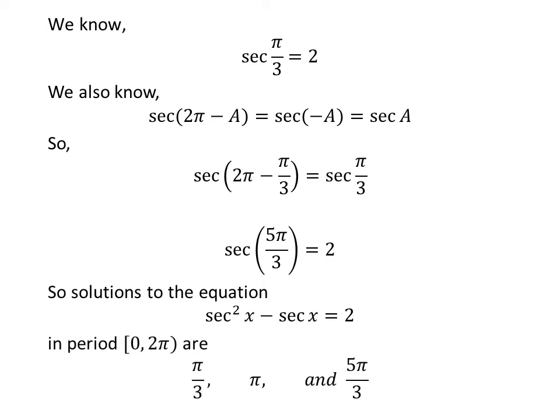So the solutions of the equation square of secant of x minus secant of x equals 2 in the interval 0 to 2π are: π/3, π, and 5π/3.